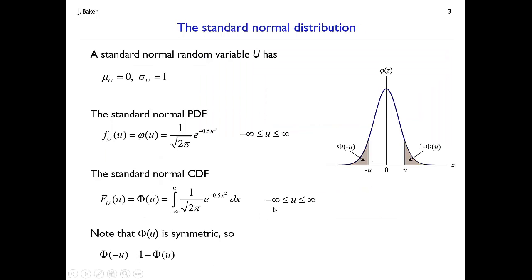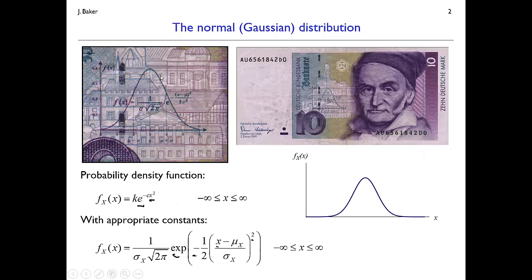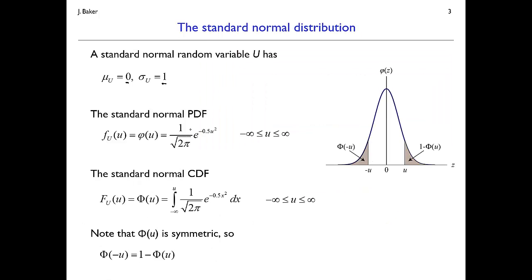Let's look at the standard normal random variable. This is a normally distributed random variable that has a mean of 0 and a standard deviation of 1. With those values, the standard deviation terms of 1 and the mean value of 0 disappear, so the equation simplifies down to 1 over √(2π) times e to the minus 1/2 u squared. That common PDF gets its own notation: lowercase φ(u).